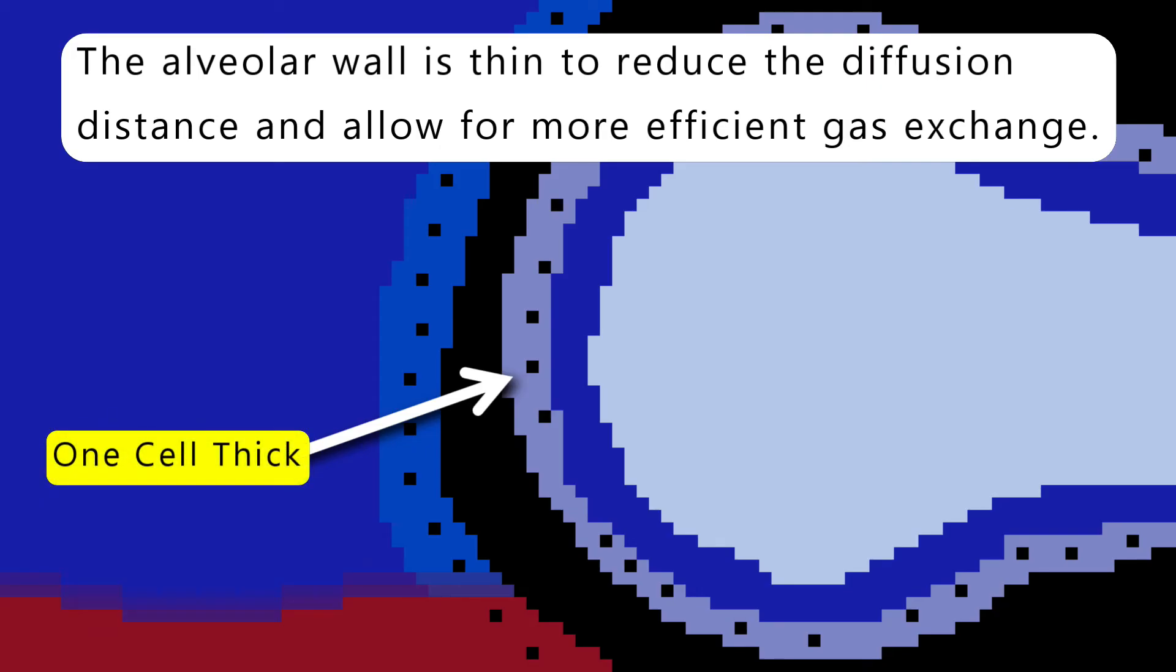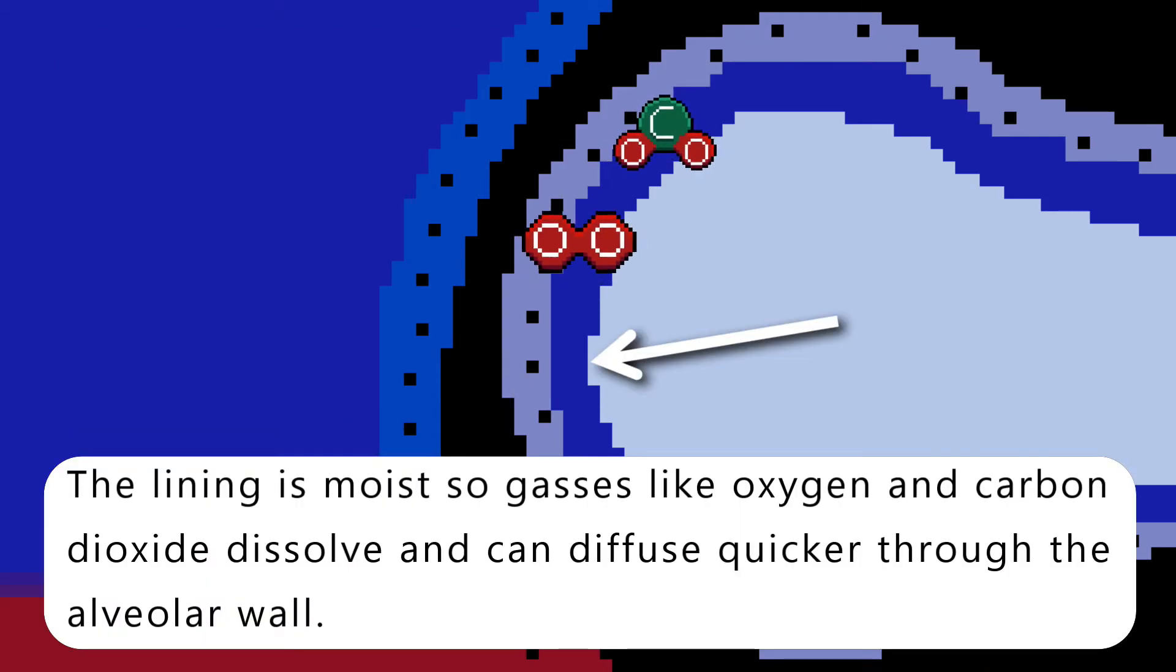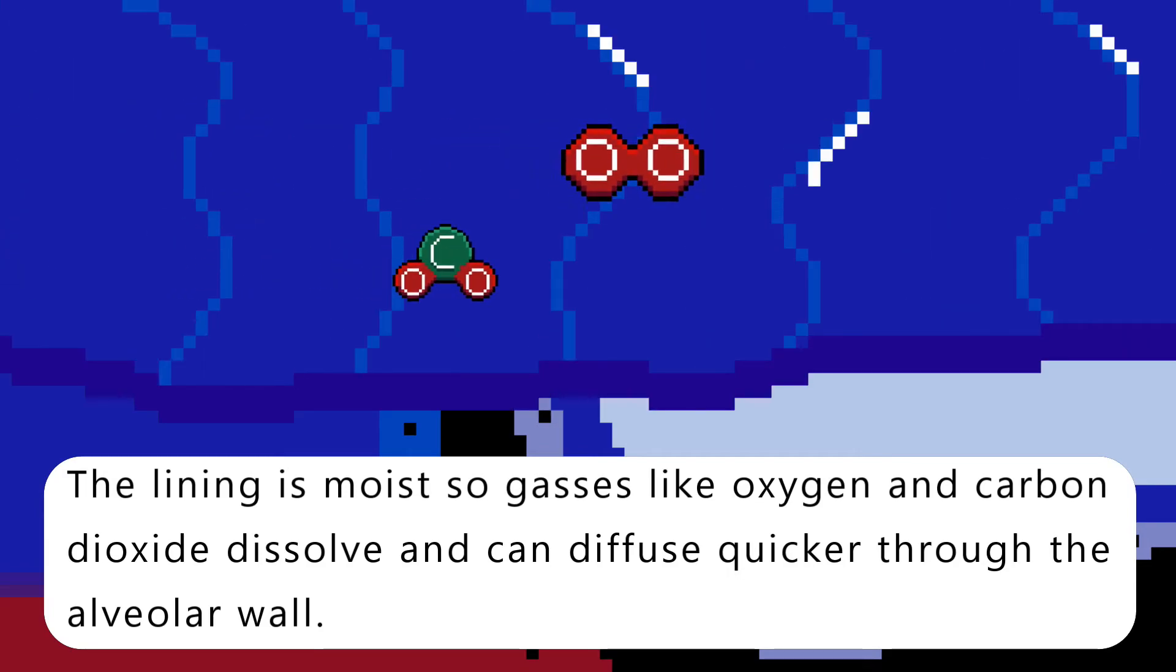The alveolar wall is thin to reduce the diffusion distance and allow for more efficient gas exchange. The lining is moist so gases like oxygen and carbon dioxide dissolve and can diffuse quicker through the alveolar wall.